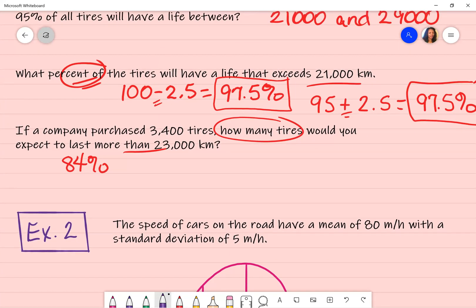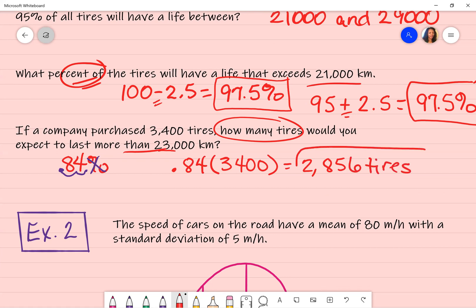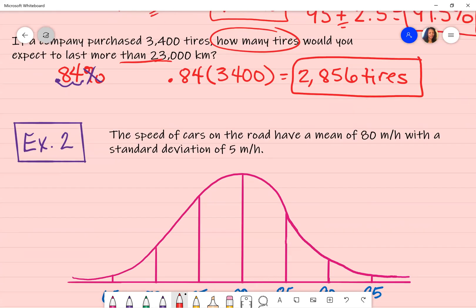What you do have to do though, is you're going to have to change this to a decimal. So the decimal is understood to be after the number, move it over two places, get rid of the percent sign. And so we have 0.84 times whatever is given in your word problem. Do not use the normal bell curve information. So 0.84 times 3,400 tires will give me how many tires would you expect to last more than 23,000 kilometers? It's going to be 2,856 tires. Make sure you convert it to a decimal before you try to figure that answer out.